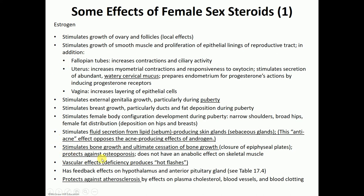Estrogen also stimulates bone growth, leading to the growth spurt that increases bone length so people get taller, but it will eventually lead to complete ossification of the epiphyseal plates. Estrogen is protective against osteoporosis — that is why after menopause, when estrogen levels are low, women are more prone to osteoporosis. Estrogen also has a vascular effect, and the deficiency of estrogen after menopause leads to hot flashes. Estrogen is also protective against atherosclerosis, which is another reason atherosclerosis becomes more common in women after menopause.